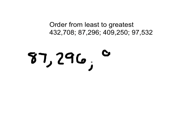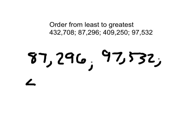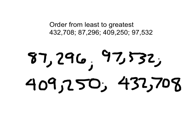At that point, we're going to look at our other numbers. Are there any other numbers around 87,296 that have that same number of digits in that place value? We've got 97 here, so we'll write 97,532. Then we're back to comparing — which one is smaller of those two? 409,250 is smaller. I'm putting semicolons in between those as our space holders. Before you move on, always make sure you have listed each and every one of those numbers originally given to you and listed them correctly. If this is from least to greatest, does it go 87,296, then 97,532, then 409,250, then 432,708? It makes sense.